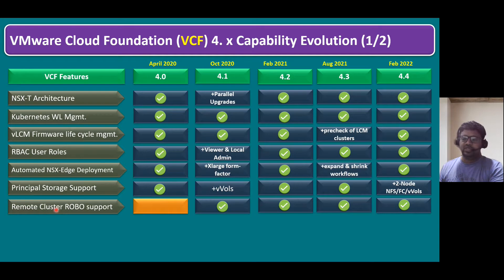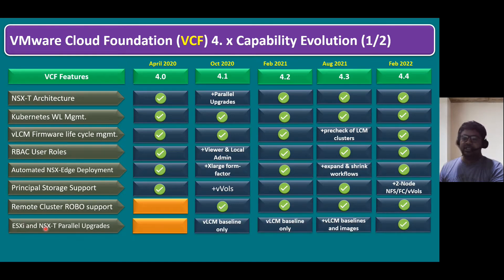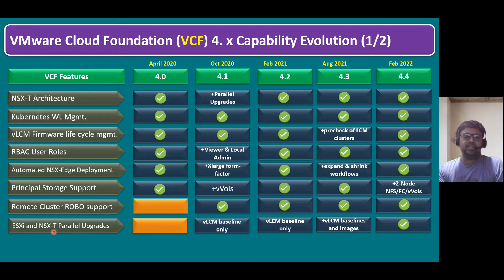Another key feature is remote cluster support, also called ROBO — remote office and branch office. In version 4.0 there was no facility to deploy VCF at remote or branch office locations, but from 4.1 onwards you can deploy on edge locations and ROBO infrastructures. Also from 4.1 onwards, not only NSX-T parallel upgrades but also ESX and NSX-T parallel upgrades are supported. Without VCF, ESX and NSX-T parallel upgrades are not recommended.